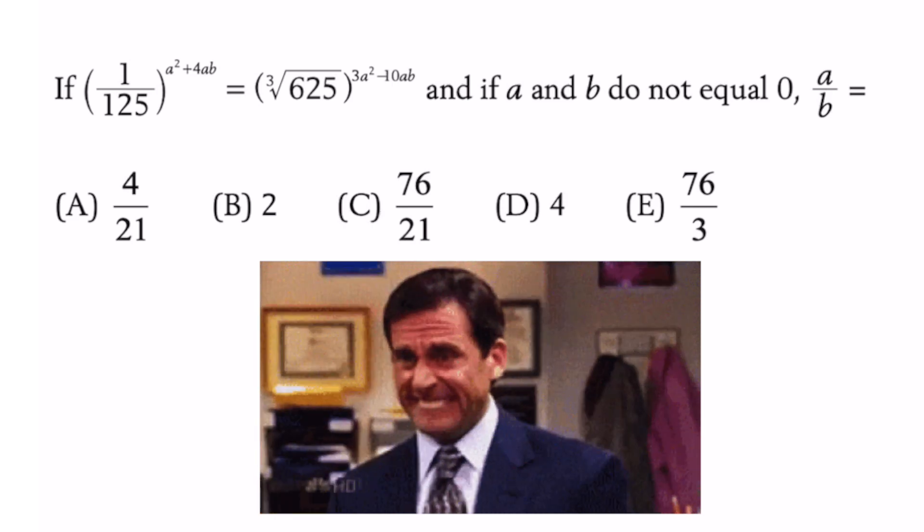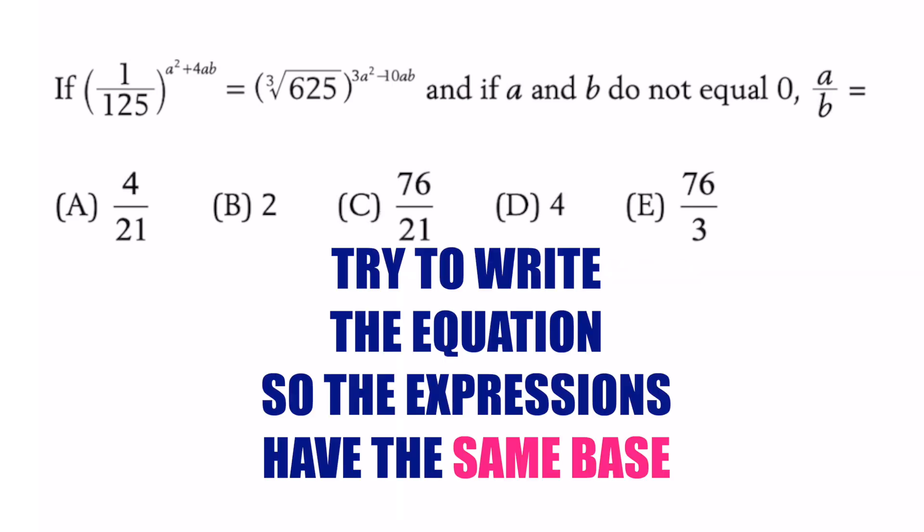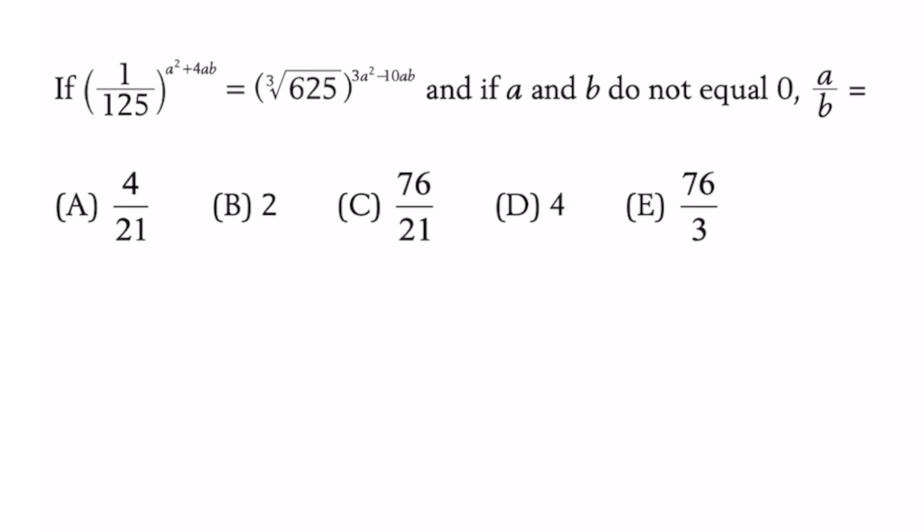Don't get nervous. This one's not too bad. If you notice you can write this into the same base, because 125 is the same as five to the third power, and 625 is five to the fourth power. And you're going to see why that helps.